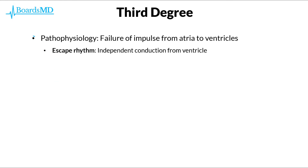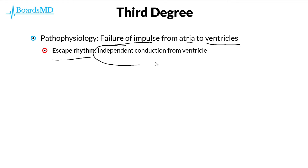Overall, the pathophysiology of third degree heart block is a failure of electrical impulses traveling from the atria to the ventricles. This ultimately results in what is known as an escape rhythm, in which the ventricle starts to perform independent conduction that is independent from the conduction through the atria.